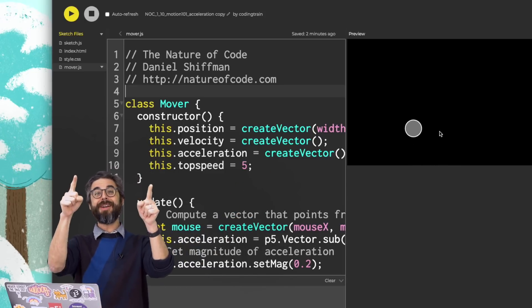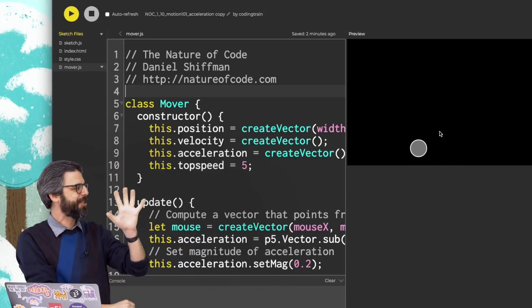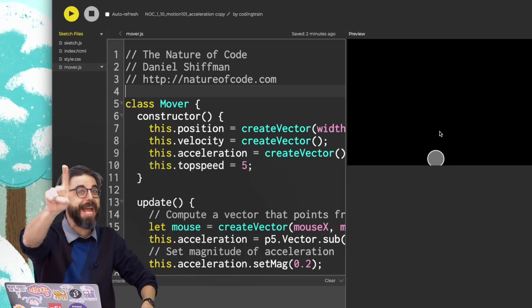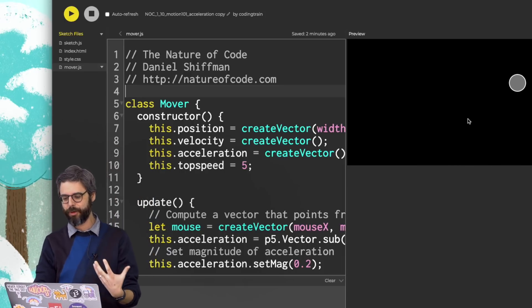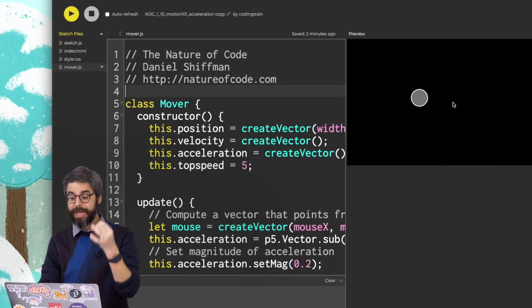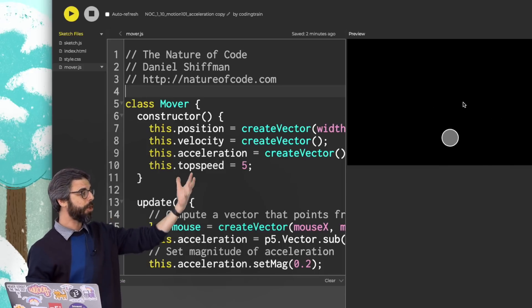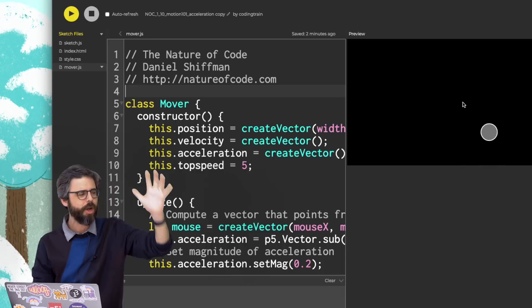Hello. Welcome to another chapter one video for Nature of Code on vectors. So I am building to something. I am getting somewhere to a place where I'm going to make this example for you that looks at something called acceleration and, in fact, has this walker or mover or particle, whatever you want to call it, object accelerating towards the mouse.